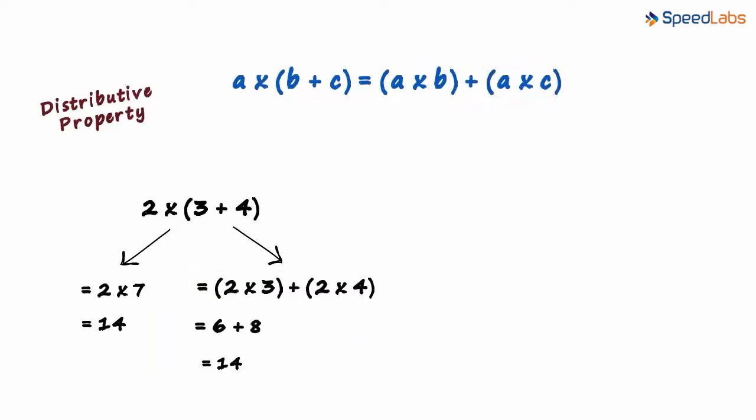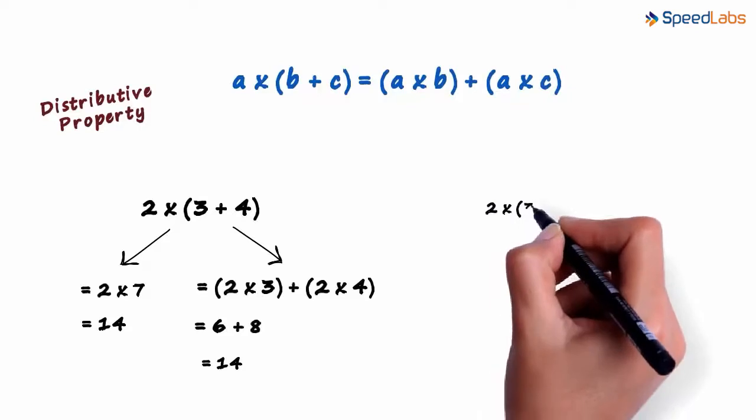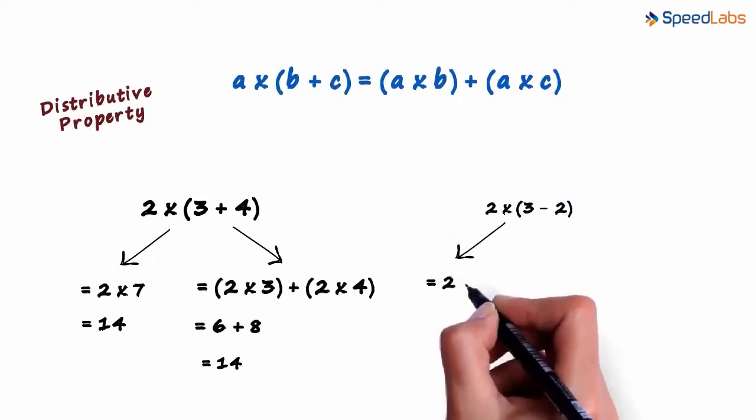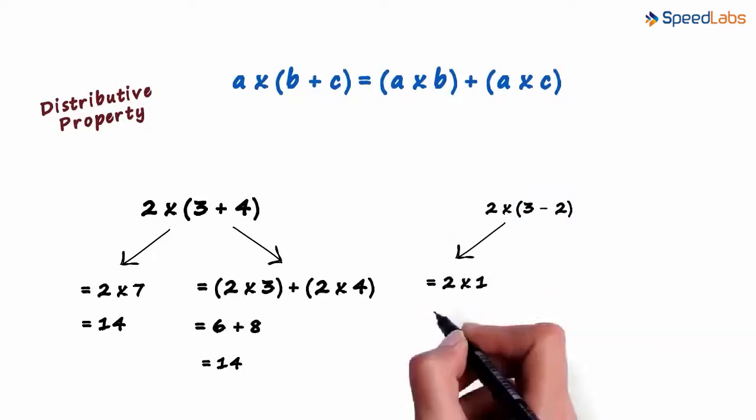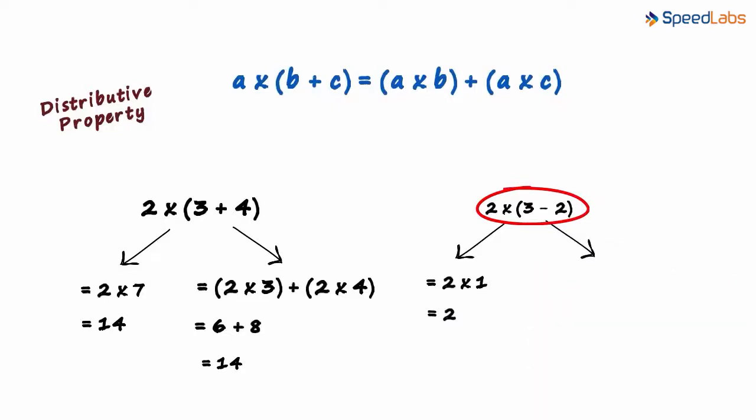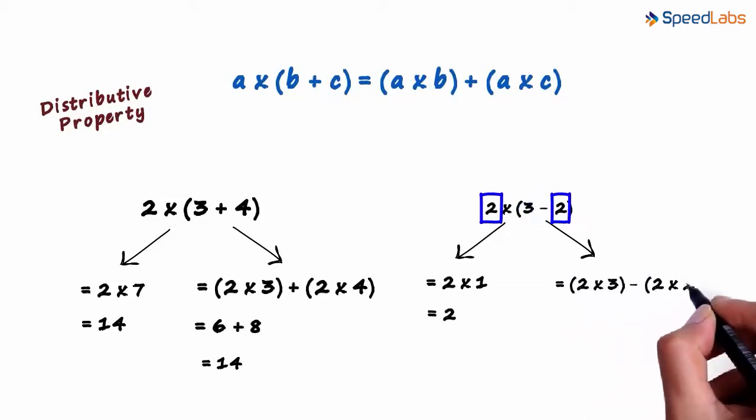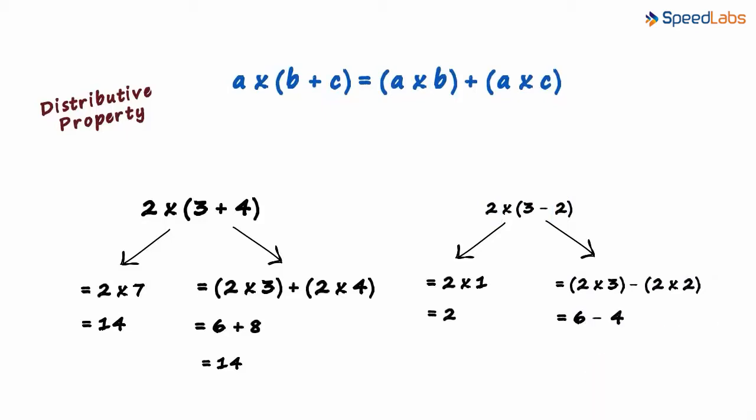Let's look at a similar example. We are asked to evaluate 2 multiplied by 3 minus 2. 3 minus 2 is 1 and therefore we can write it as 2 multiplied by 1, which equals 2. Can this expression be written in another way? We can also write this expression as 2 multiplied by 3 minus 2 multiplied by 2. That equals 6 minus 4, which is 2.